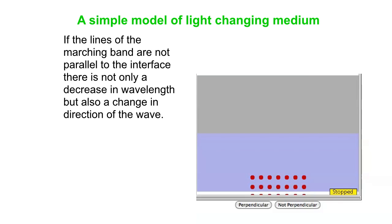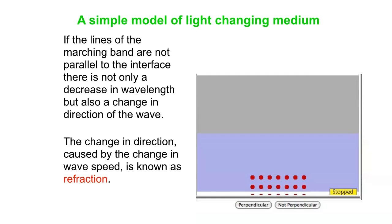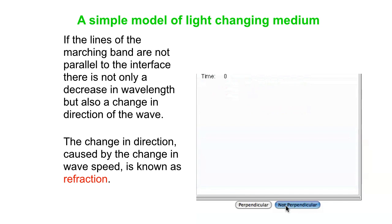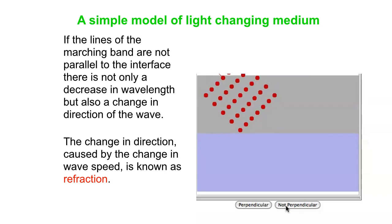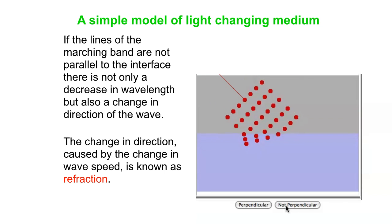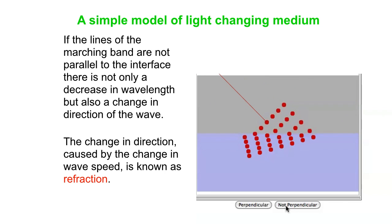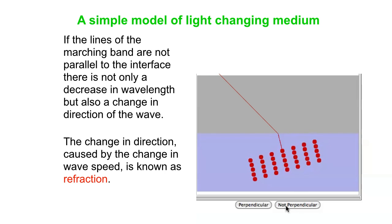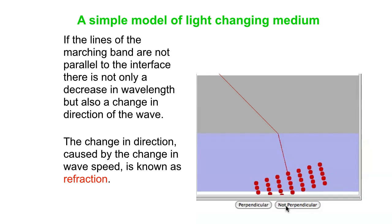So what happens when there is an angle change? That's what we call refraction. Now we've got the marching band lines not parallel to the interface, so different parts of each row hit that slow medium at different times, and that actually causes the direction of the marching band to change. You can see that angle change, and light does the same thing — we call that refraction.